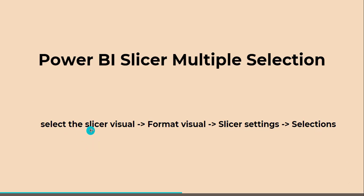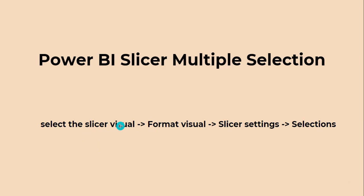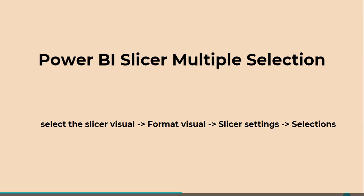To check that, we have to initially select the slicer visual that is presented in our Power BI report. After that we have to format that visual and then move to the slicer settings. Under selection we have a few options for single selection, multiple selection, and so on.